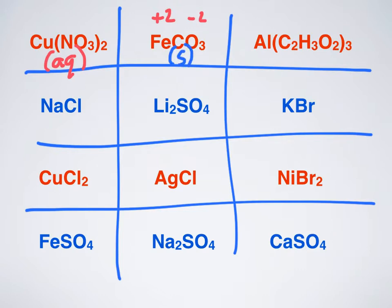Next up, Al(C2H3O2)3. I have aluminum, and then C2H3O2 is acetate. If I look at my solubility chart, it's the very first thing I see right there in the corner. That is a solid. See if you can fill in the rest of this chart, and we'll see how you do tomorrow.